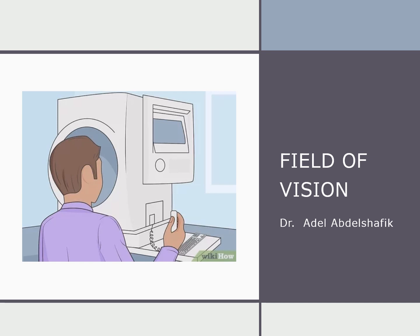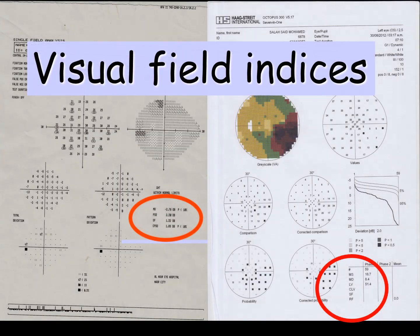This is an updated version of the lecture on field of vision. The next point is the visual field indices.